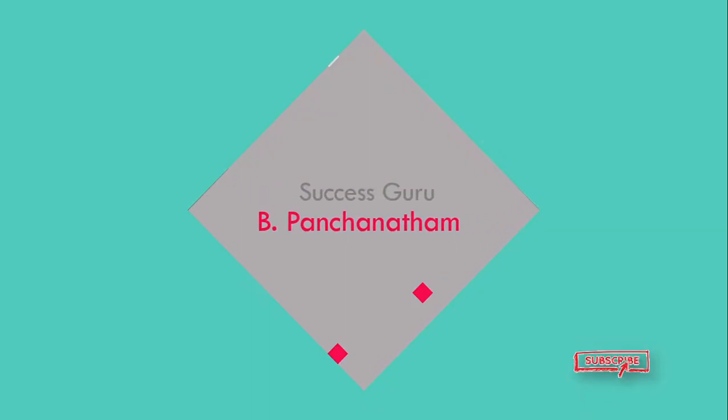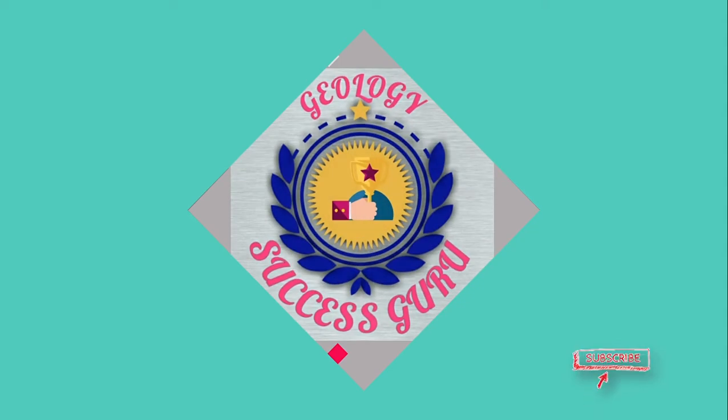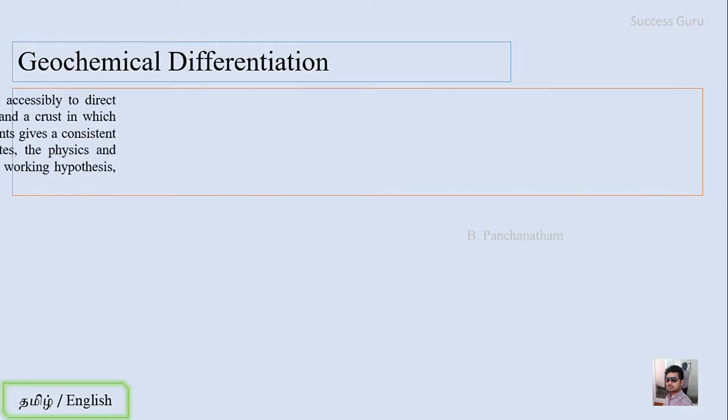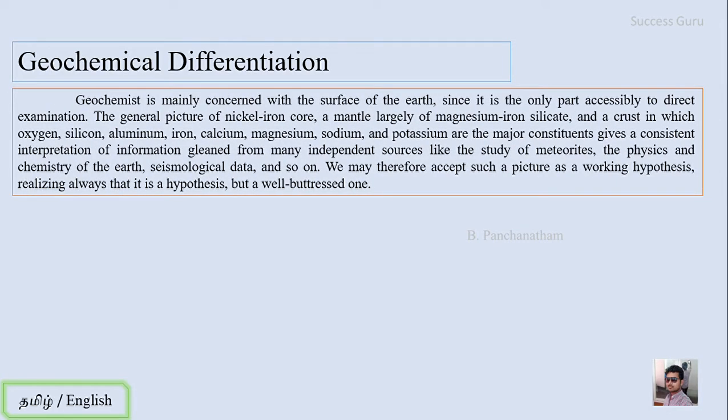Welcome to my channel Success Guru and myself Panjshanathan. Let's get into the heading: Geochemical Differentiation. The geochemist is mainly concerned with the surface of the earth since it is the only part accessible to direct examination. The general picture of nickel iron core, a mantle largely of magnesium iron silicate and a crust with oxygen, silicon,